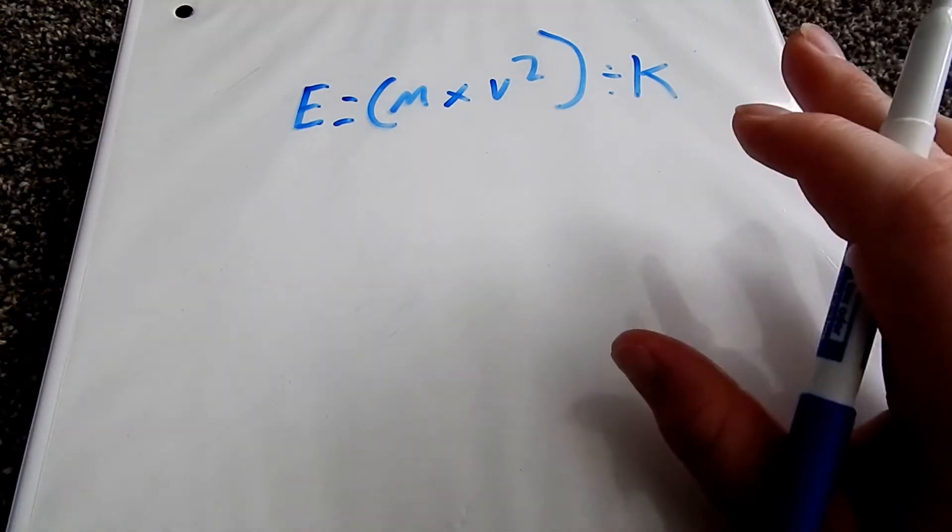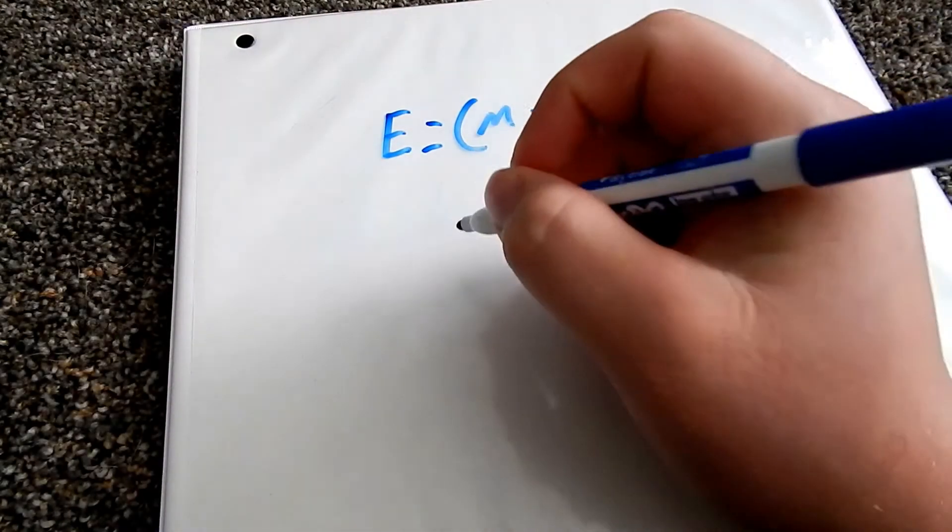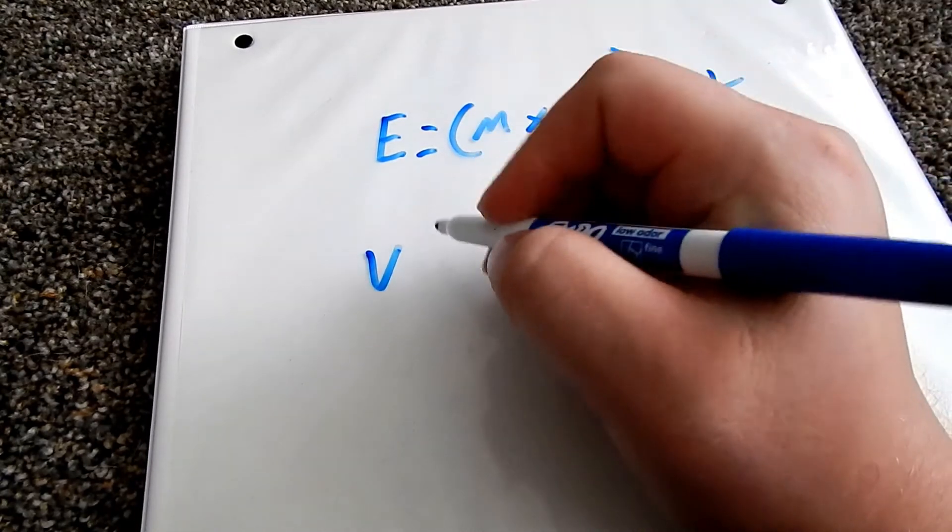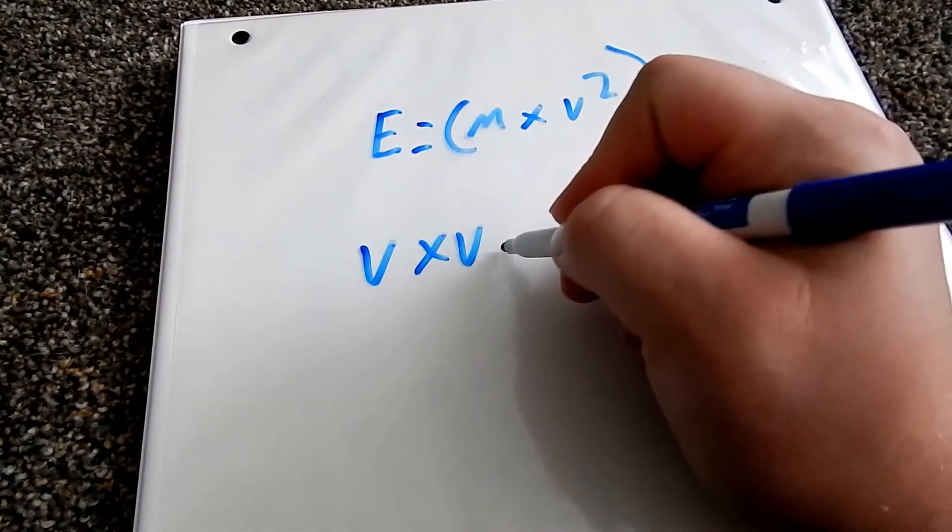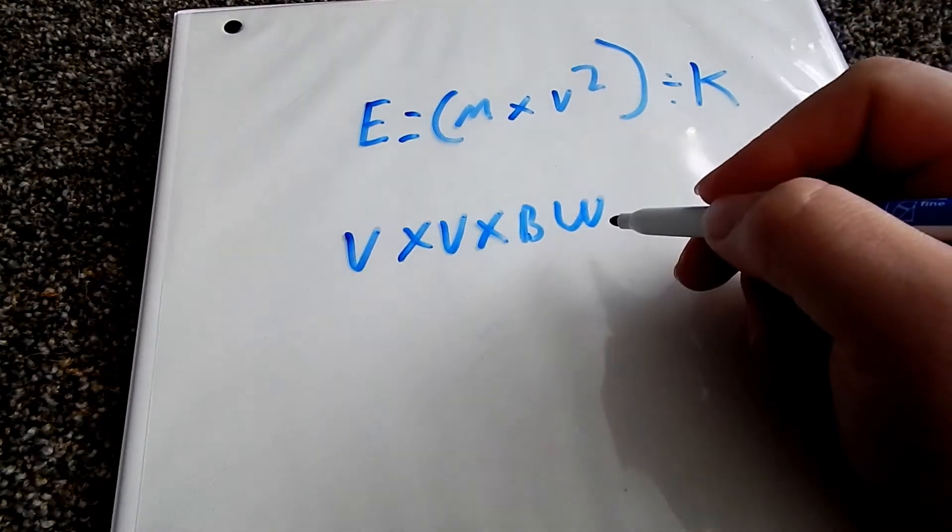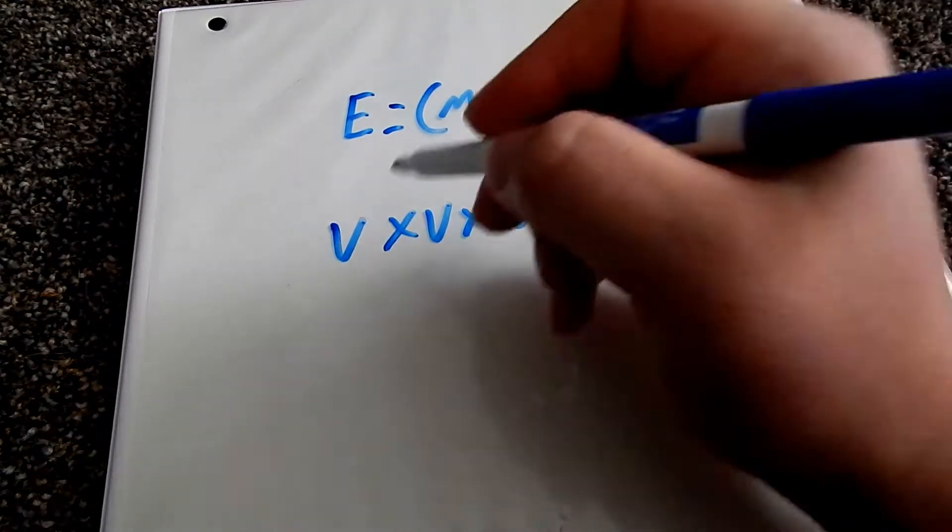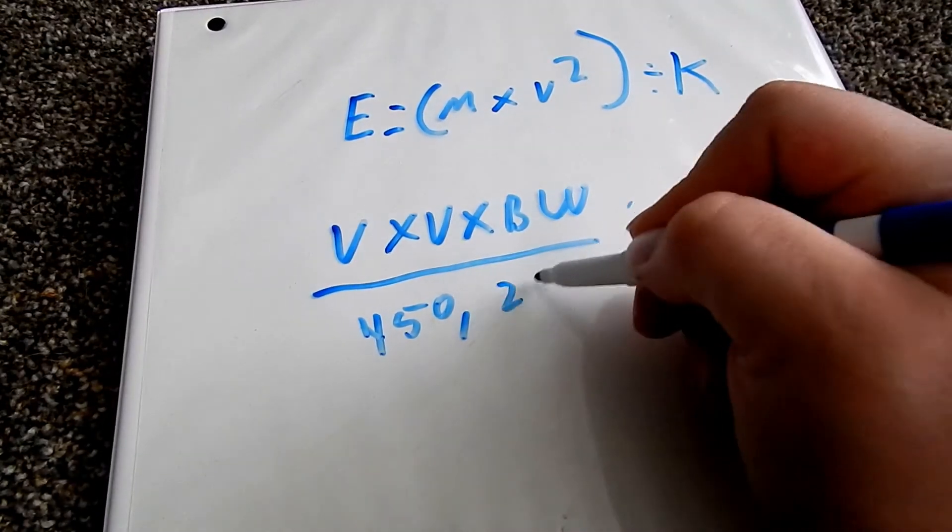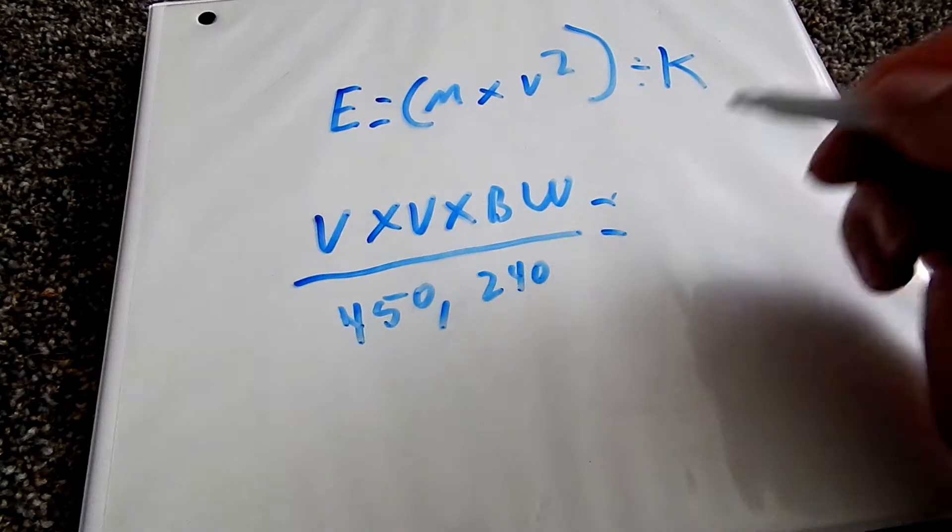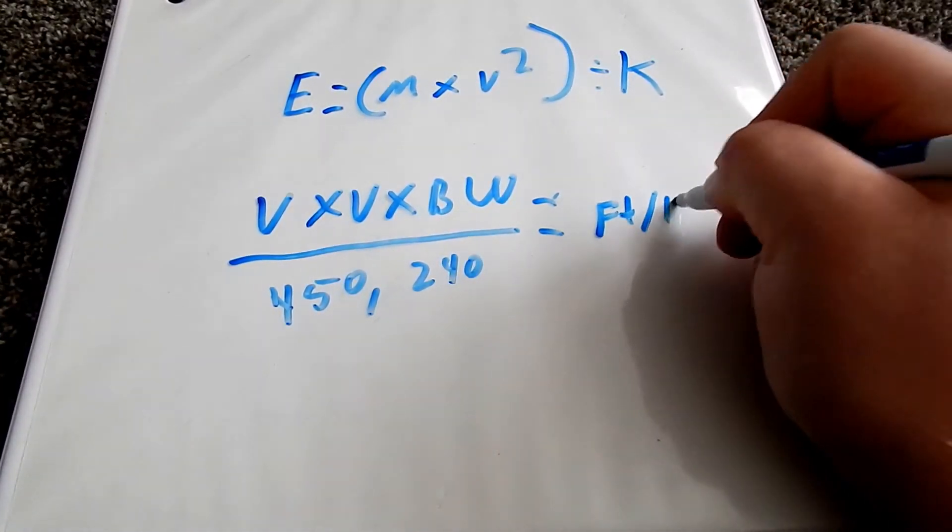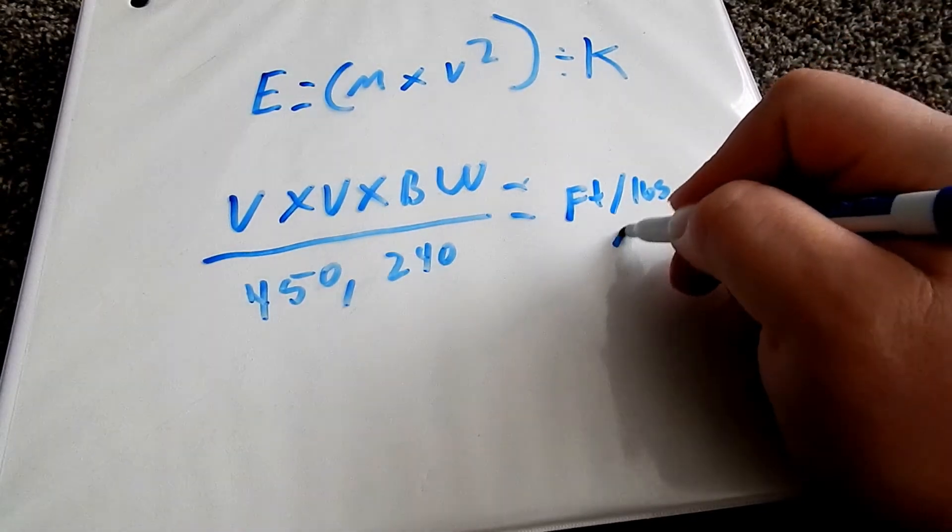In terms of the most common way that you'll see it done, let's just go ahead and go velocity times velocity times bullet weight, which is mass, divided by 450,240. This will equal your foot pounds of muzzle energy.